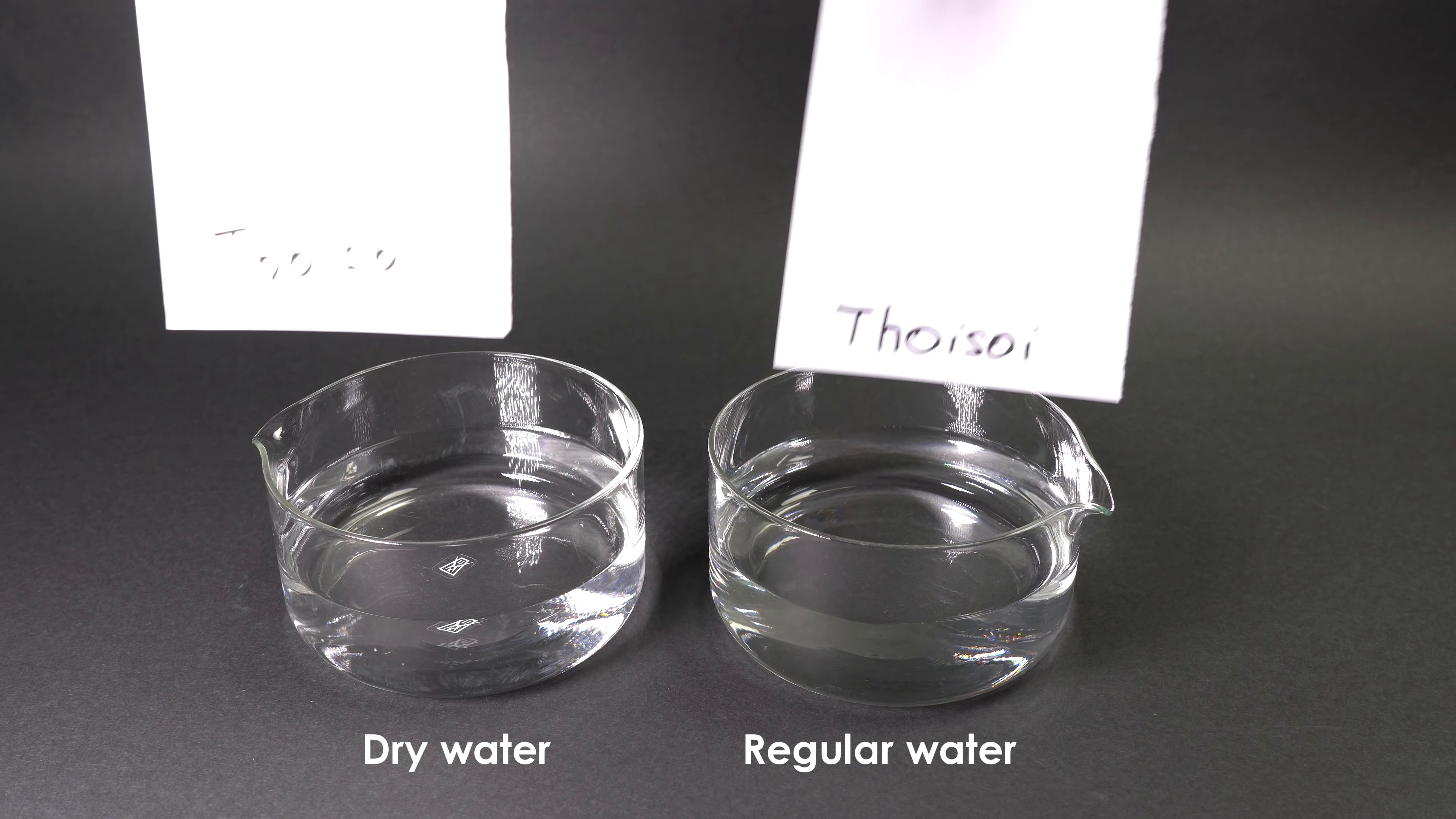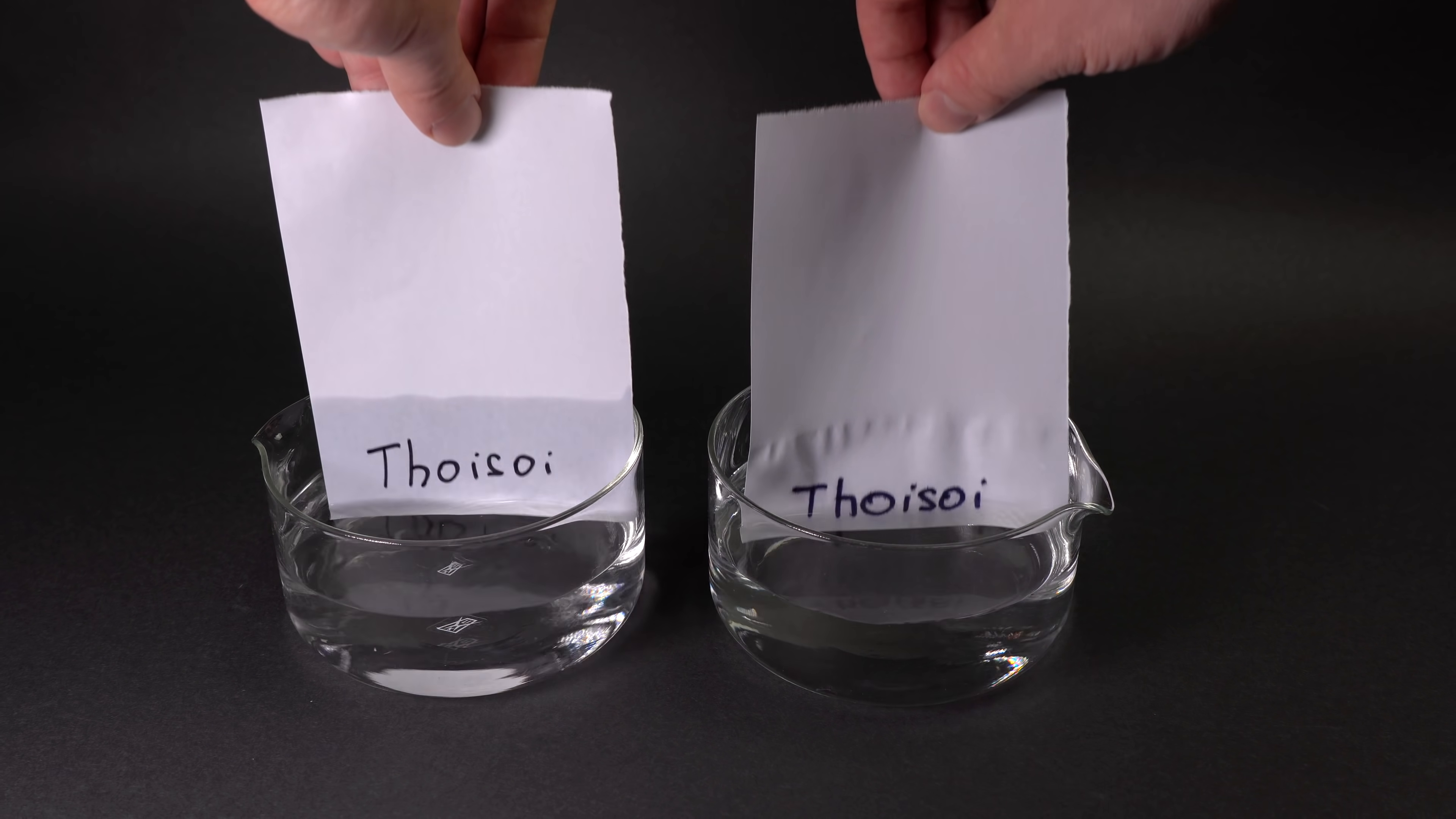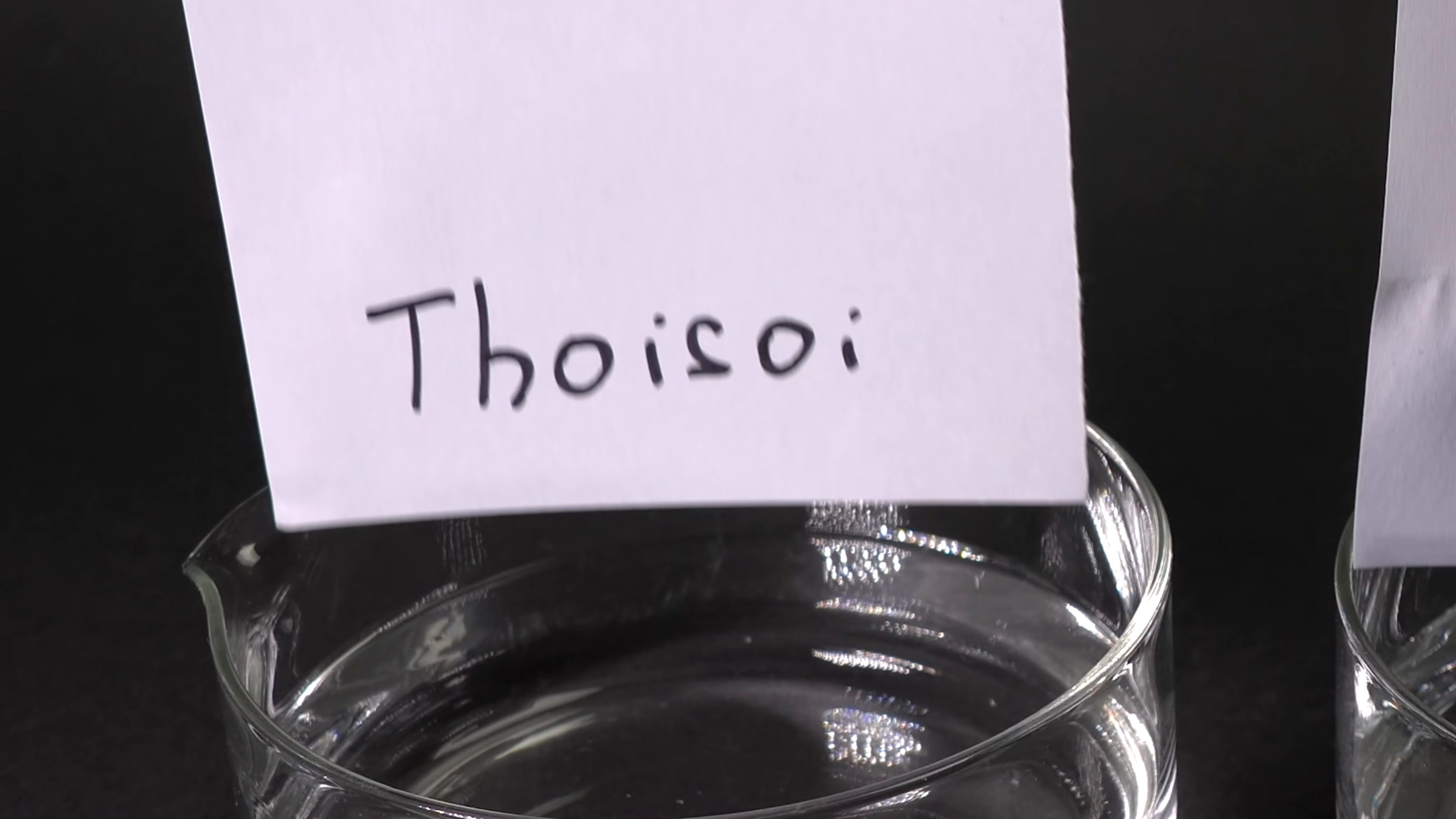For example, if we write something onto two sheets of paper with a marker pen and submerge one in regular water and the other one in dry water, we'll clearly see a difference. Regular water easily dissolves the marker pen dye whereas the dry water doesn't affect the dye.